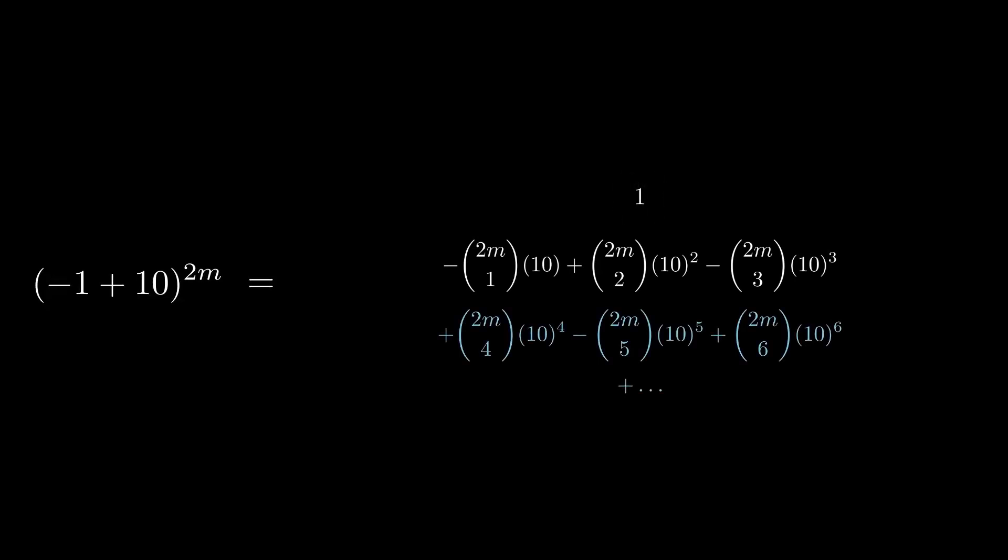Now focus on the terms from the third line onward. Each of these has at least 4 trailing zeros, since each is multiplied by a power of 10 that is at least 4. Now focus on the terms in the second line. We can choose m so that each term in this line also has at least 4 trailing zeros.